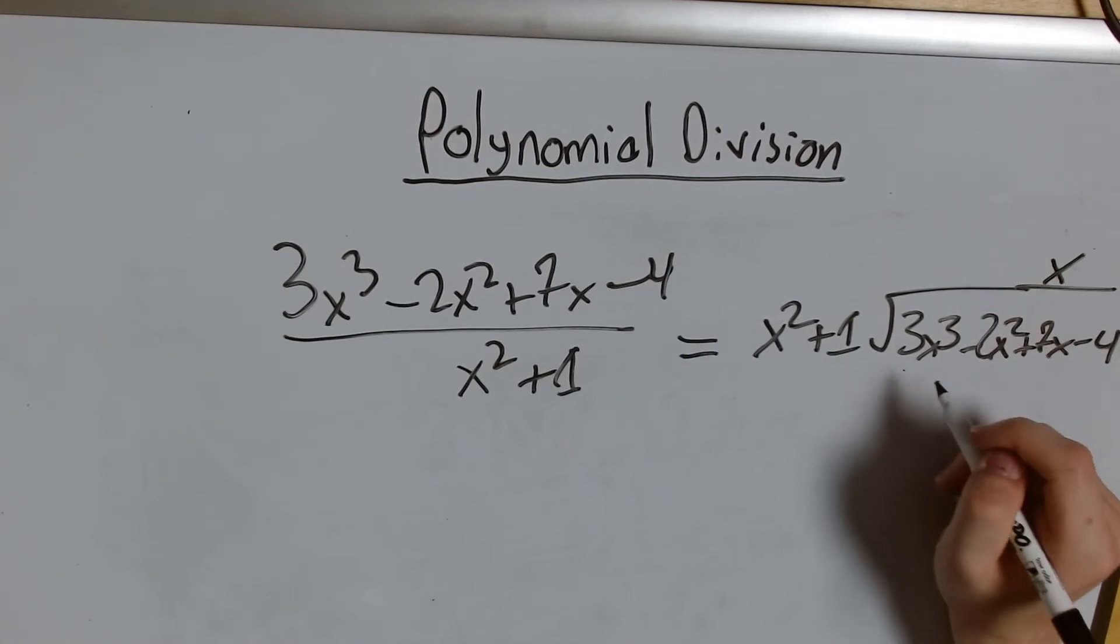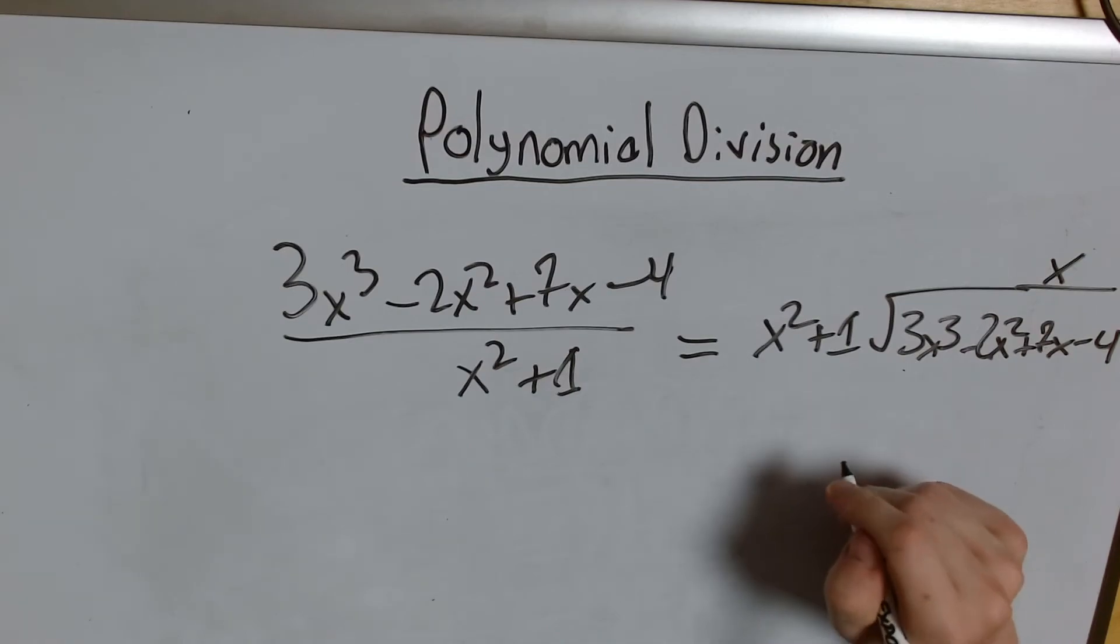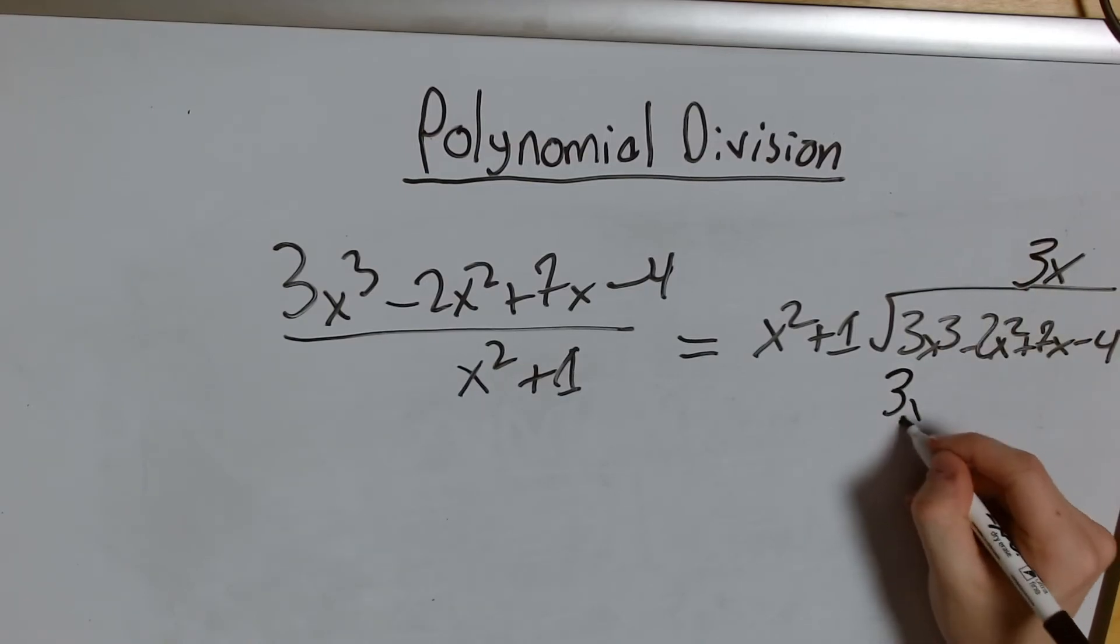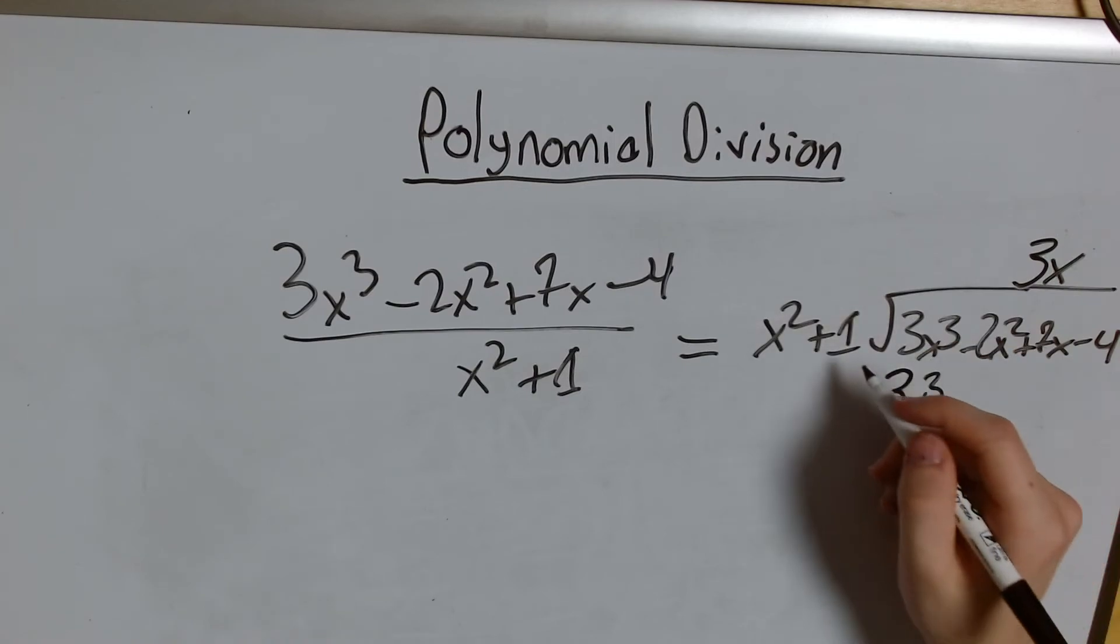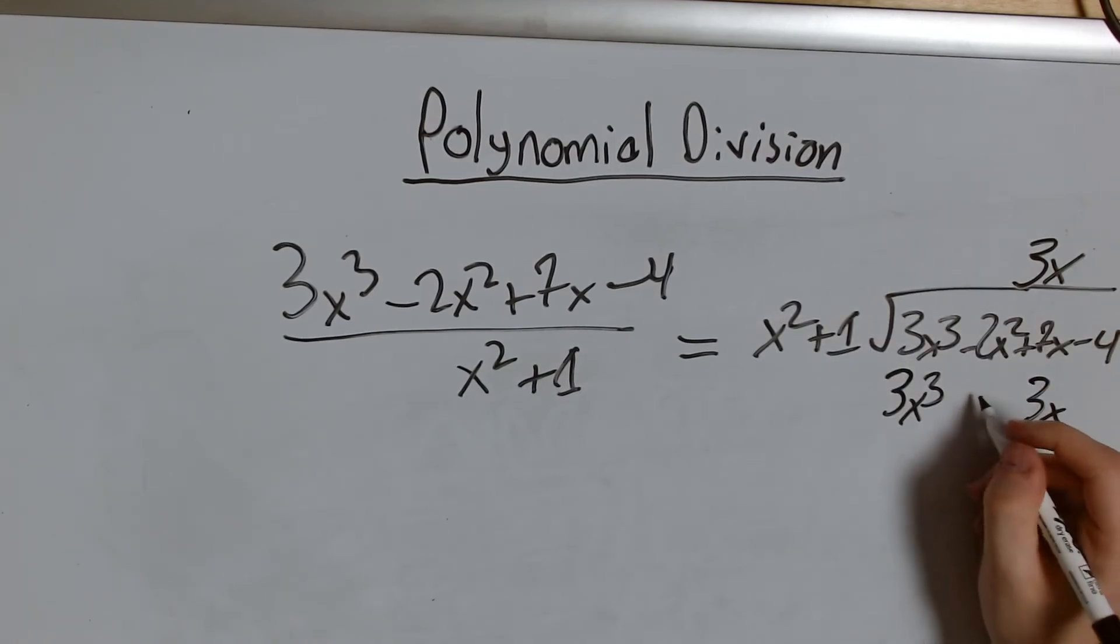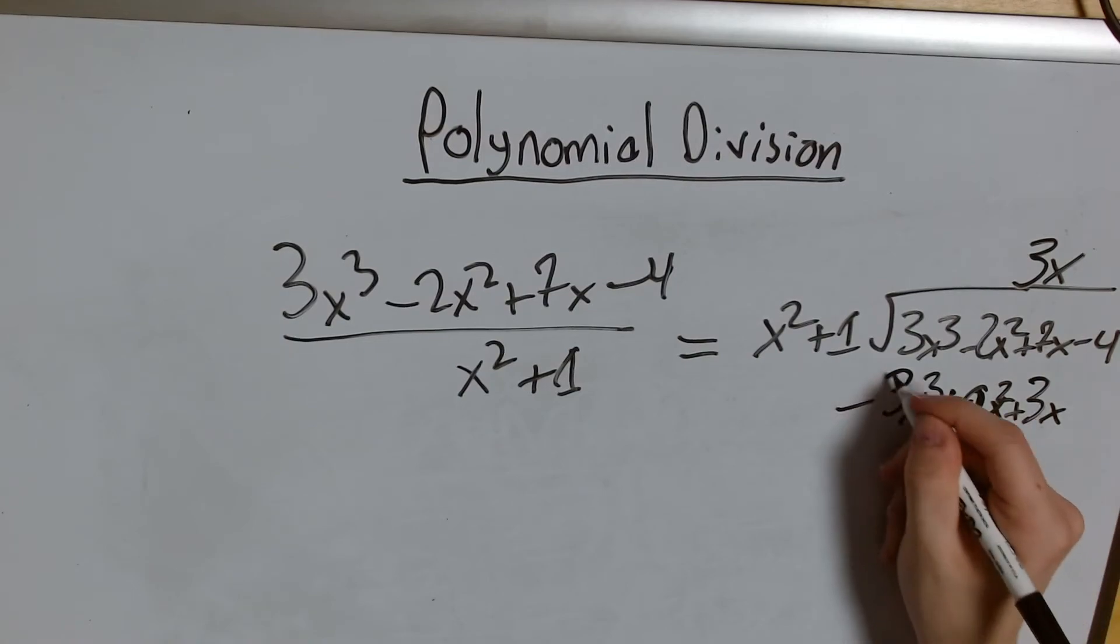But I want to have 3x cubed, not just x cubed. So I'm going to need to multiply x squared by both an x and a 3. So I have 3x cubed and then I have another 3x here. I have nothing in between so I'm just going to leave that as a 0x squared. I subtract.